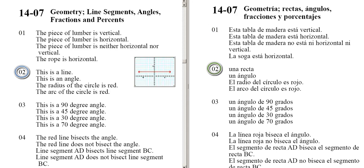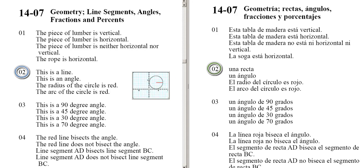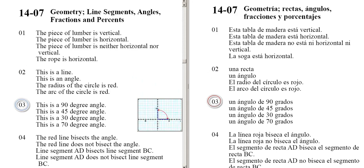This is a line. This is an angle. The radius of the circle is red. The arc of the circle is red. This is a 90 degree angle.